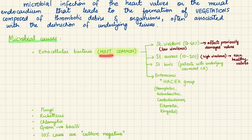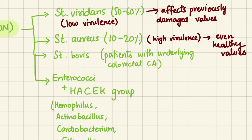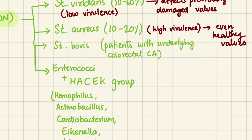The most common causes of infective endocarditis are extracellular bacteria. These include Strep viridans, which is the most common cause. It is a low virulence organism and it is going to affect only valves which have been previously damaged, such as from rheumatic heart disease.